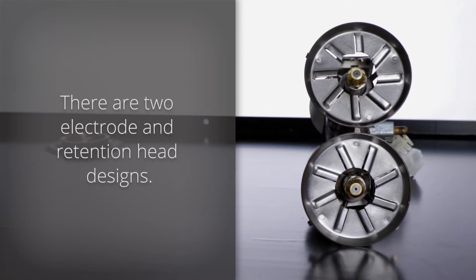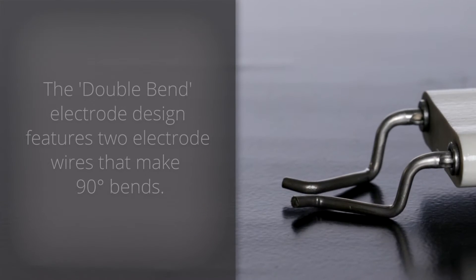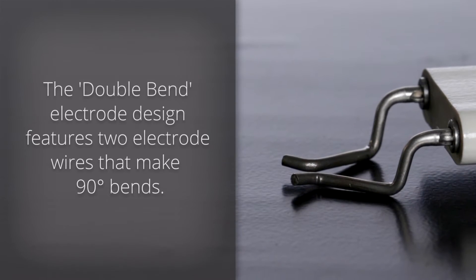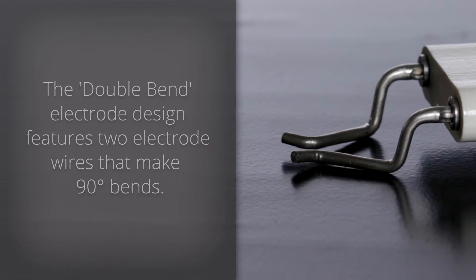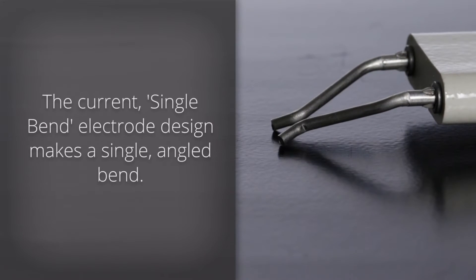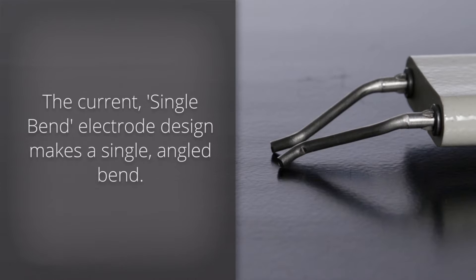Note that there are two electrode retention head designs. The double-bend electrode design features two electrode wires that make 90 degree bends. The current single-bend electrode design features a single angled bend.